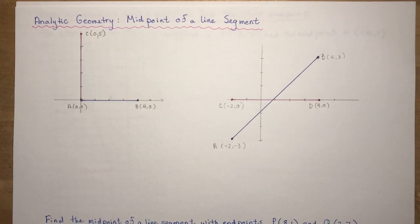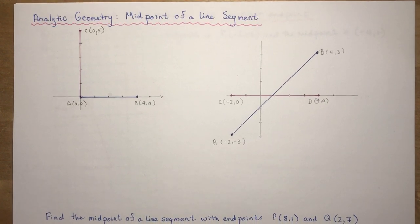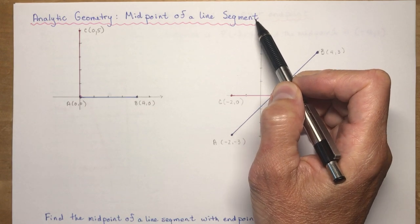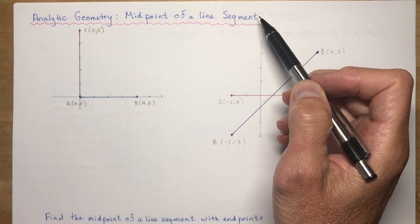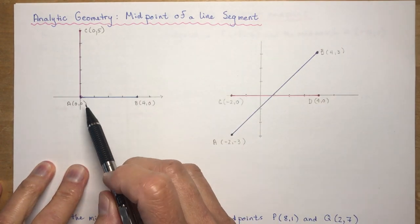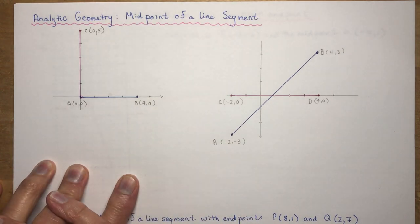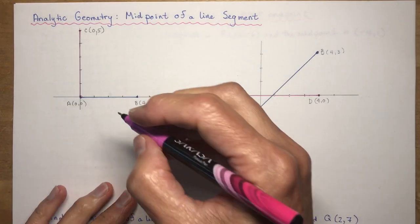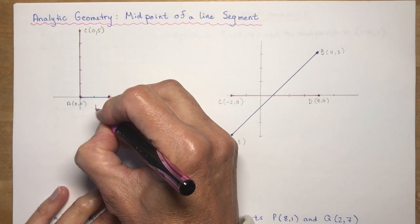Analytic geometry is the second unit in the grade 10 math textbook, and the first lesson is the midpoint of a line segment. The keyword here is that it is a line segment — you can't find the midpoint of a line because lines don't end. Starting simply, let's look at line segment AB that goes from 0 to 4. The midpoint is easily found to be at 2 and 0 — halfway along the segment.